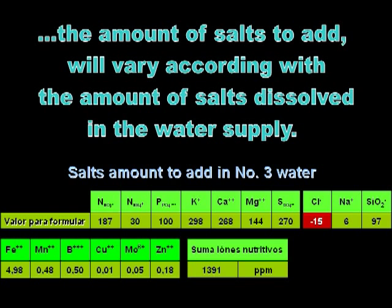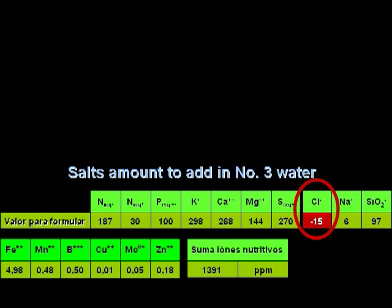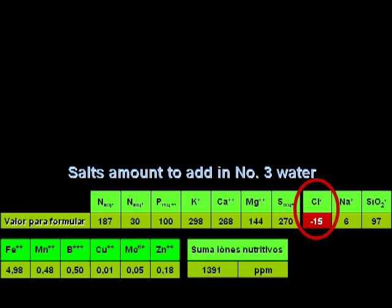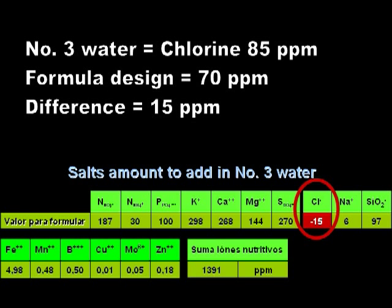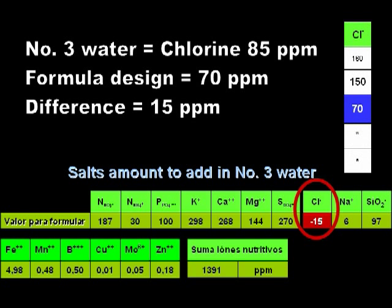There is only one observation, the number in the red cell for the chlorine ions. Since that number is negative, it indicates that the water supply has 15 ppm more of chlorine ions than the designed formula. As 85 ppm is already in the water, once the nutrient solution is prepared, it will have at least the same amount of chlorine ions as the original water. However, it obviously can't be less.